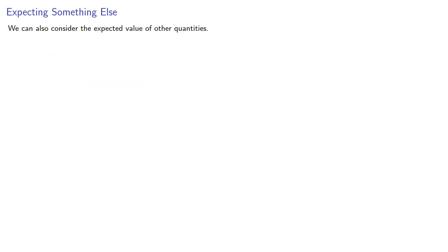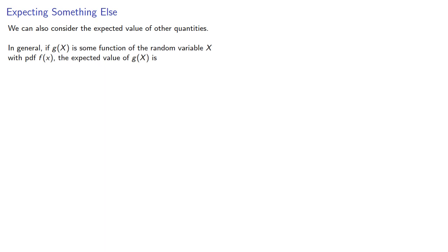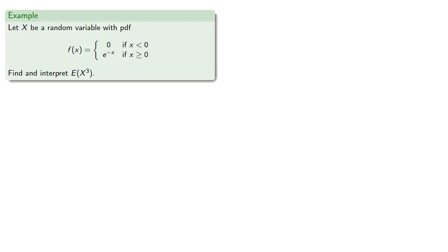We can also consider the expected value of other quantities. In general, if g of x is some function of the random variable x with PDF f of x, the expected value of g of x is computed by the integral from minus infinity to infinity of g of x times f of x dx. For example, suppose x is a random variable with a given PDF — let's find and interpret the expectation of x cubed. Our g function is x cubed, so the expectation of x cubed is the integral from minus infinity to infinity of x cubed times f of x dx.